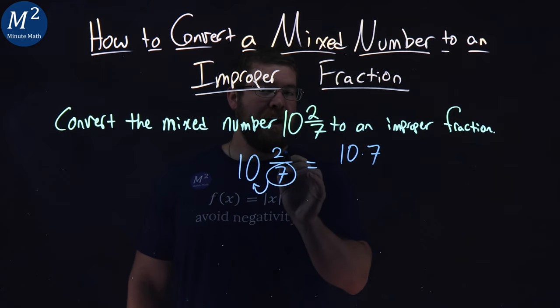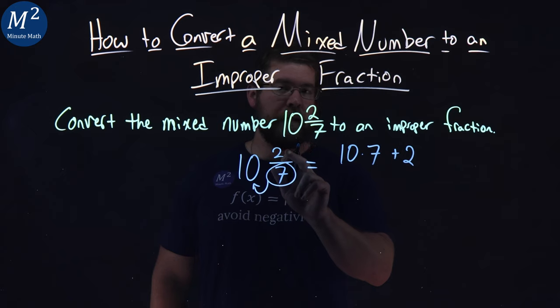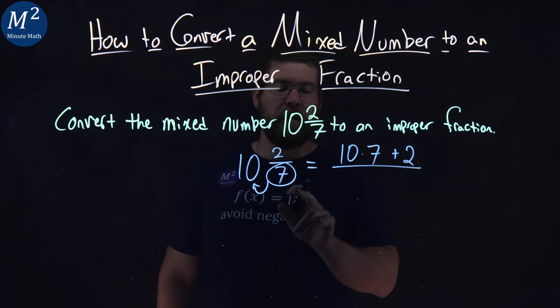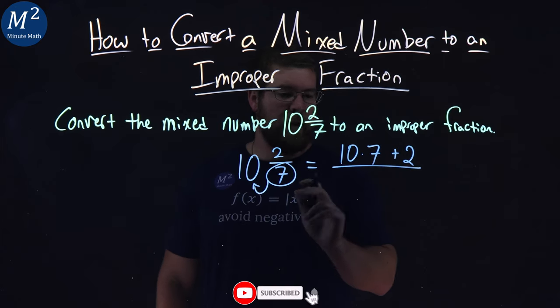Then we add what's already in the numerator, the 2, right there, and divide it by what's already in the denominator, the 7.